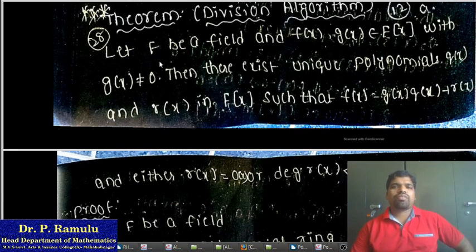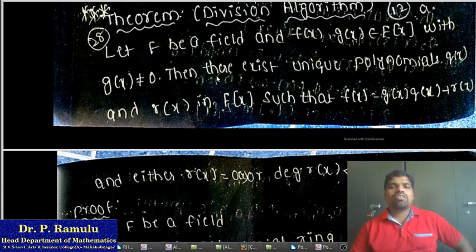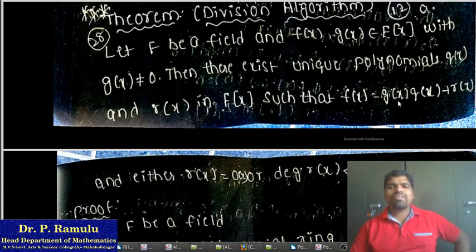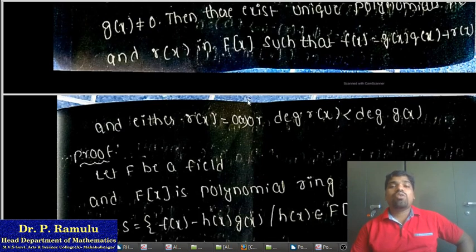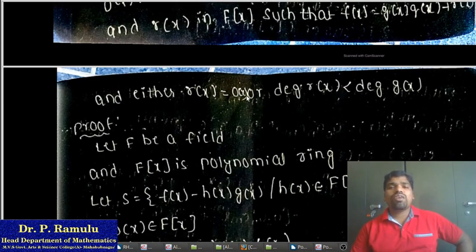Division Algorithm Theorem: Let F be a field and f(x) and g(x) be elements of F[x], where F[x] is a polynomial ring, with g(x) not equal to 0. Then there exist unique polynomials q(x) and r(x) in F[x] such that f(x) = g(x)·q(x) + r(x), where either r(x) = 0 or degree of r(x) is less than degree of g(x).